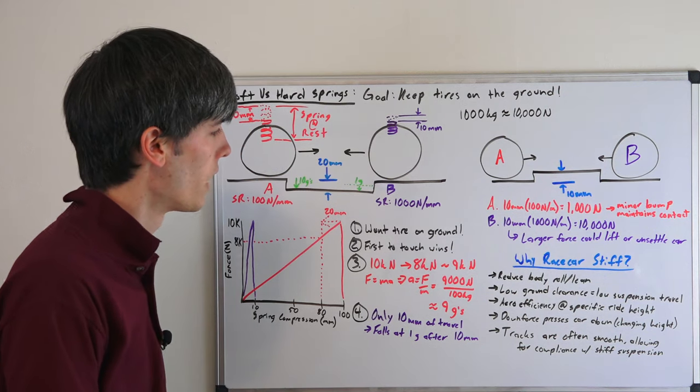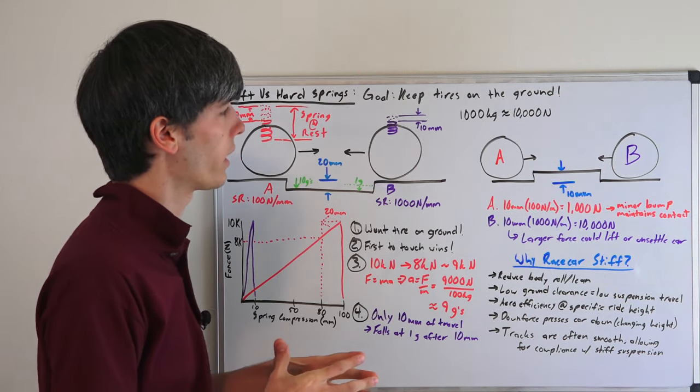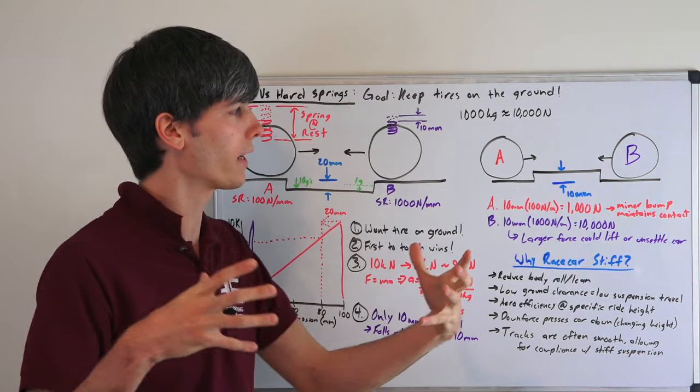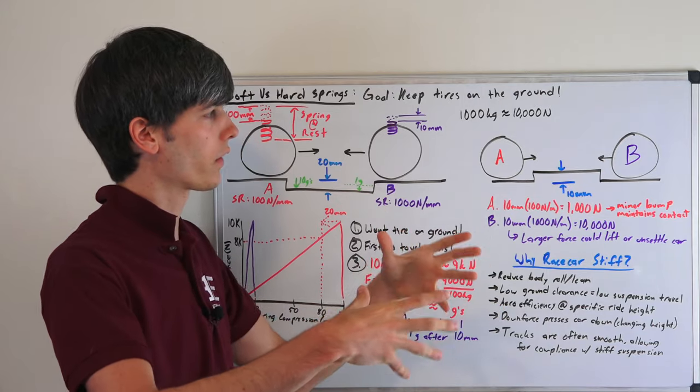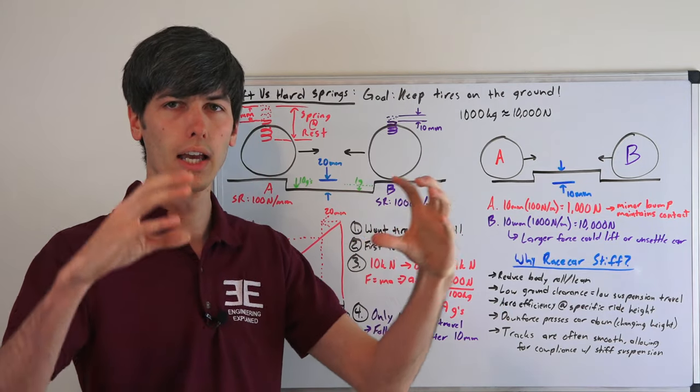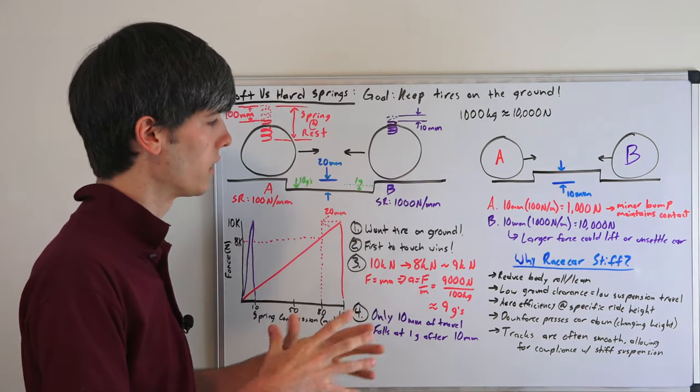The aerodynamic efficiency is at a specific ride height. So cars are set up for a very specific ride height. You want to maintain that ride height. And so you're going to have forces acting on this car that are going to be changing that. So with a stiff spring, you can maintain somewhat of an ideal ride height.